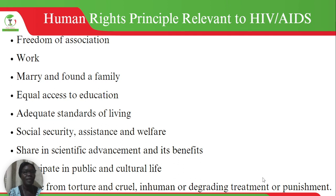The receptive partner — women are more susceptible, especially through the vaginal route. Receptive partners are also more susceptible in anal sex, meaning sexual intercourse occurring through the anal route instead of the vagina.